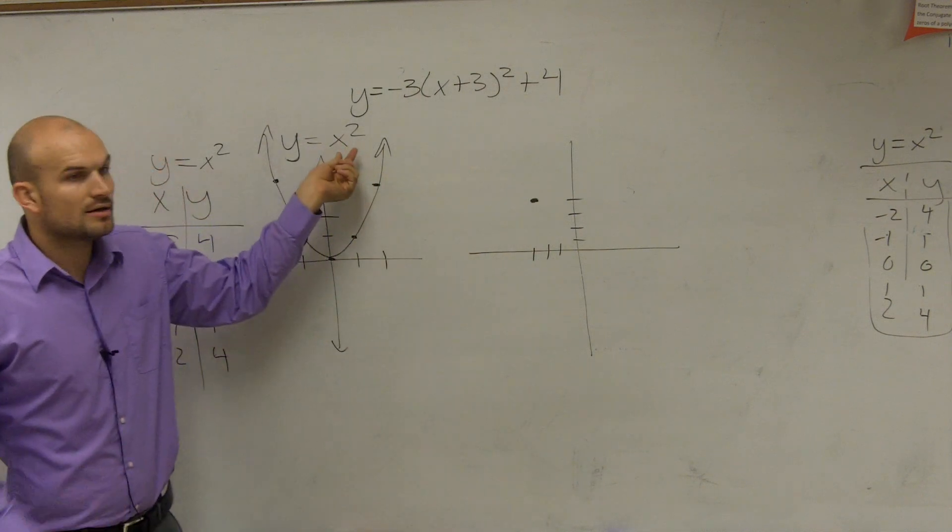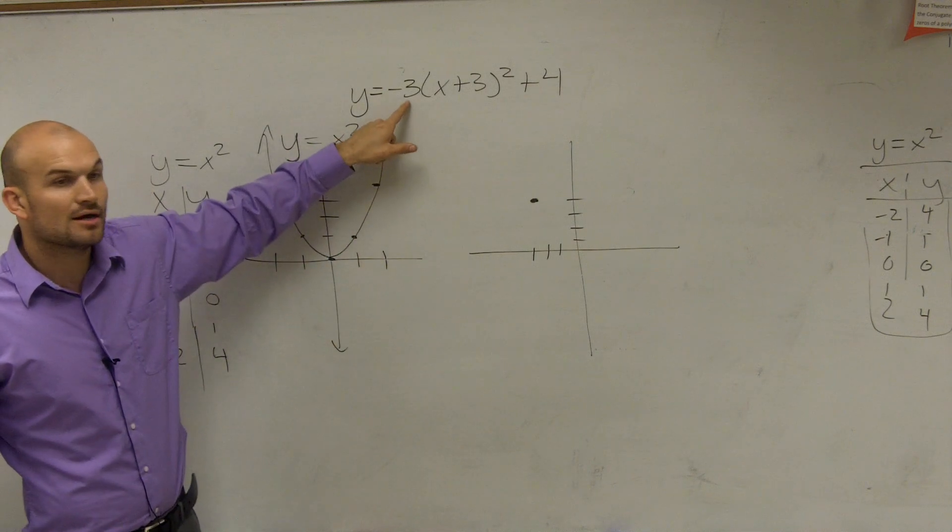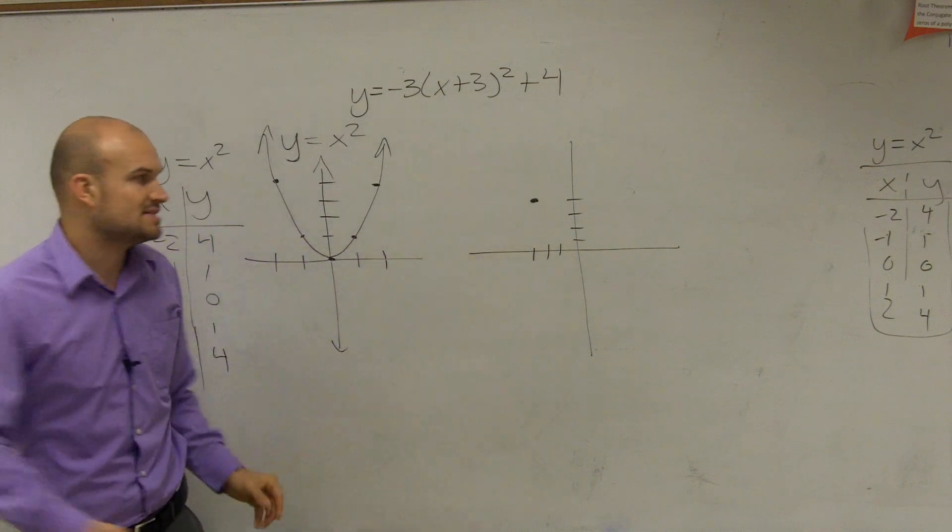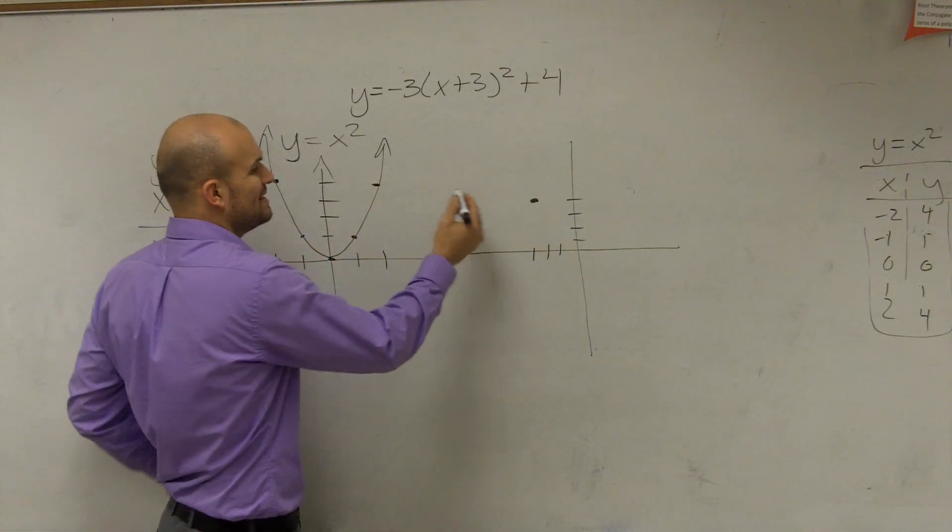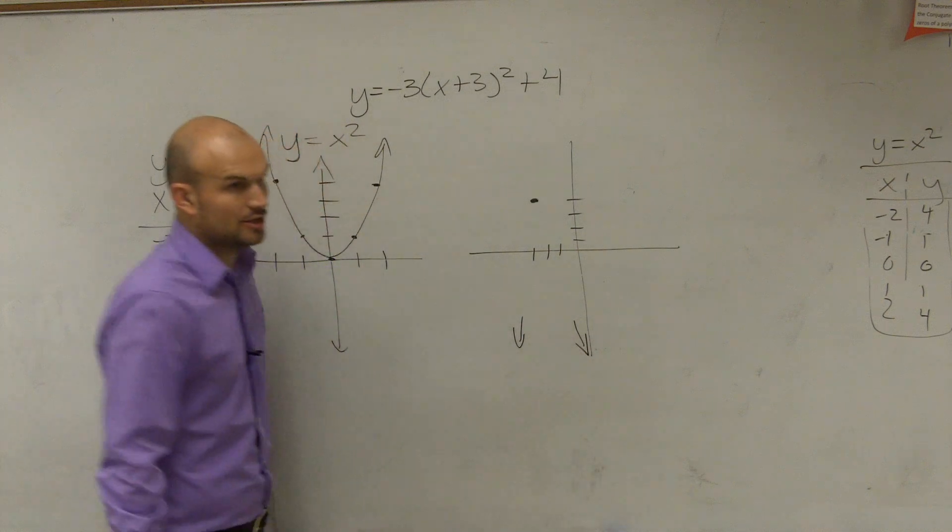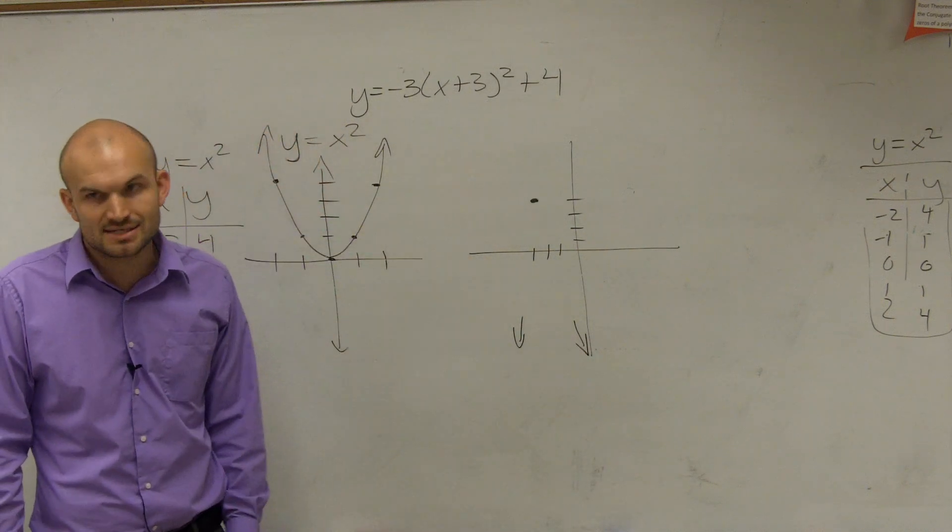Now let's take another thing. Here, my a was positive, so my vertex was a minimum. Here, my a is negative, so therefore that means it's going to be a maximum. That means my graph is now going to open down. I don't know what the graph looks like right now, but I know that it opens down. I know this is the maximum point.